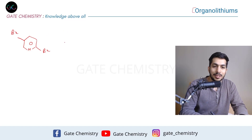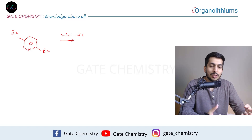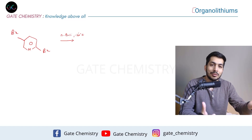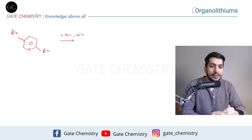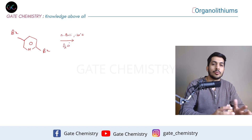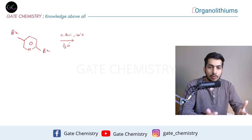The question involves a dibromo-substituted pyridine. We add n-butyl lithium at very low temperatures, around minus 100 degrees Celsius, under inert conditions — n-butyl lithium is pyrophoric and will catch fire otherwise. Then we add D₂O to introduce deuterium at one position. n-Butyl lithium is used in one equivalent. Pause and find the product.